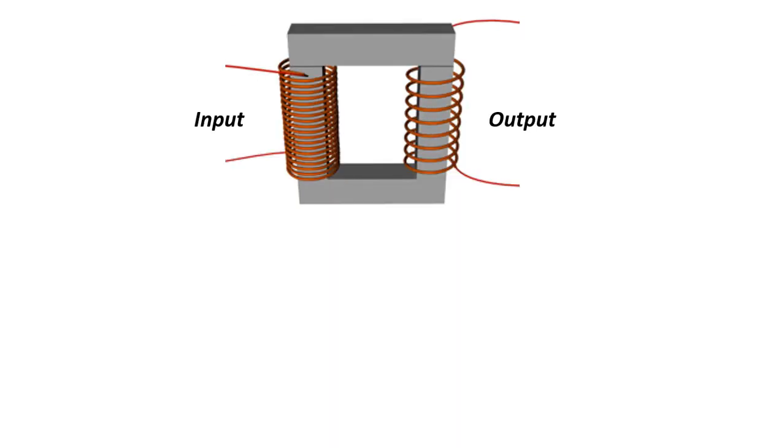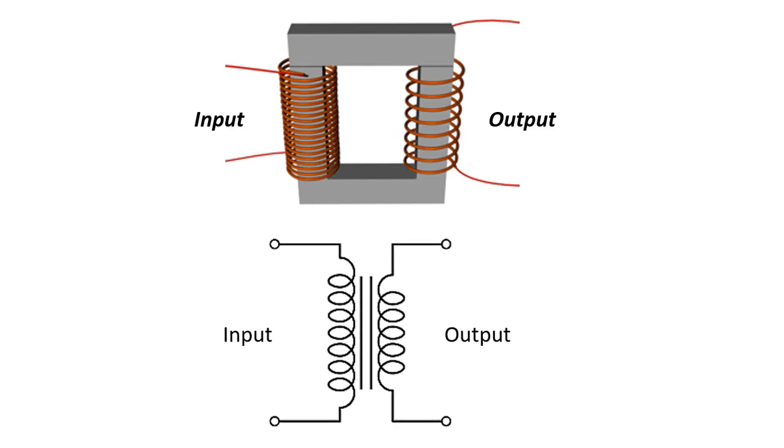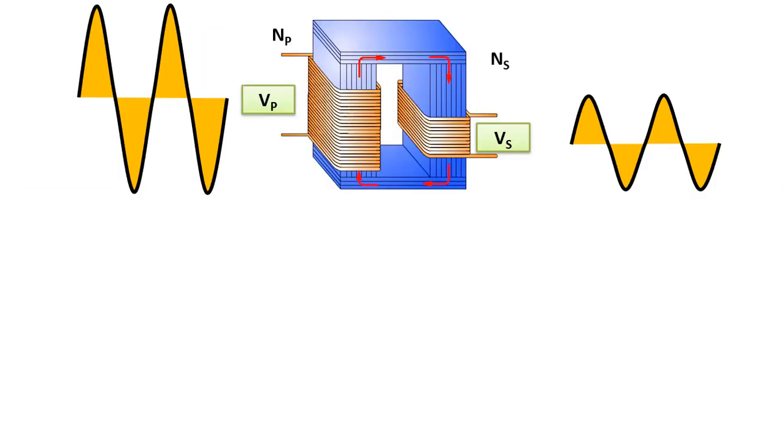In a transformer circuit, it is basically represented by the symbol you see here. The input part is called primary and the output part is called secondary. Here, we see that the winding at the primary input of the transformer is too much and the winding at the secondary output is less. This transformer is a step-down transformer. It will convert the high voltage at the input to a lower voltage at the output.